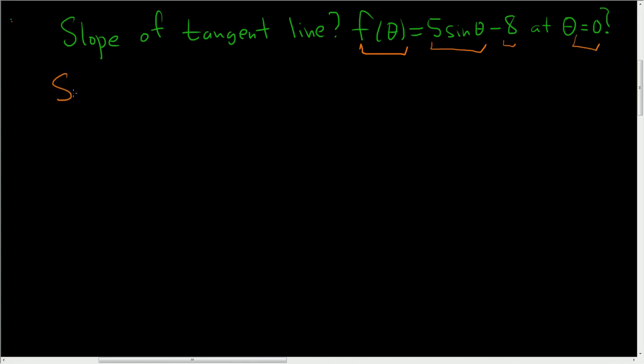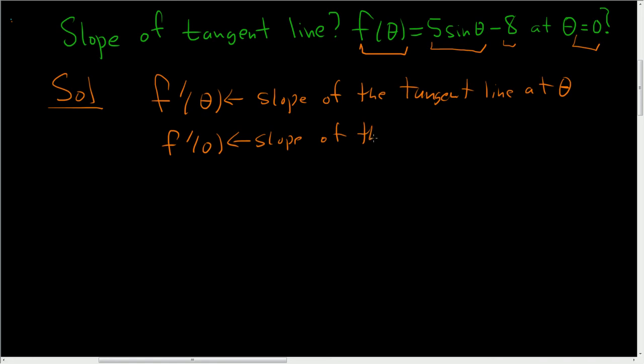So solution. What do we need to find? Well, f prime of theta, this is the slope of the tangent line at theta. So we want the slope of the tangent line at 0. All we have to do is take the derivative and plug in 0.